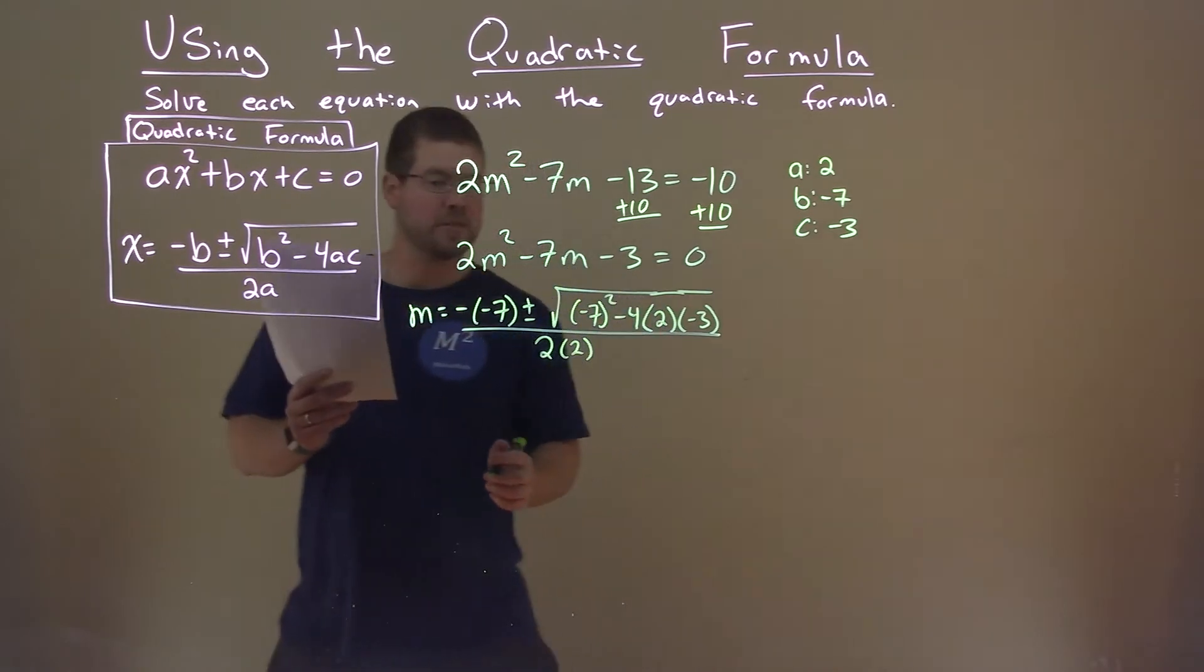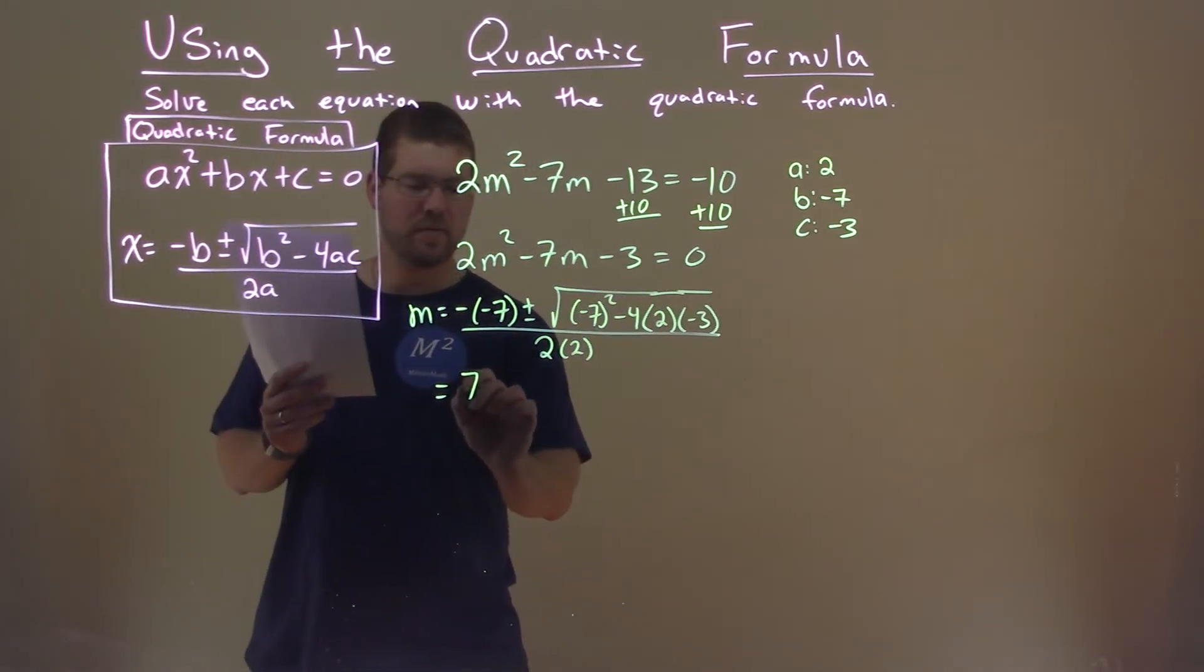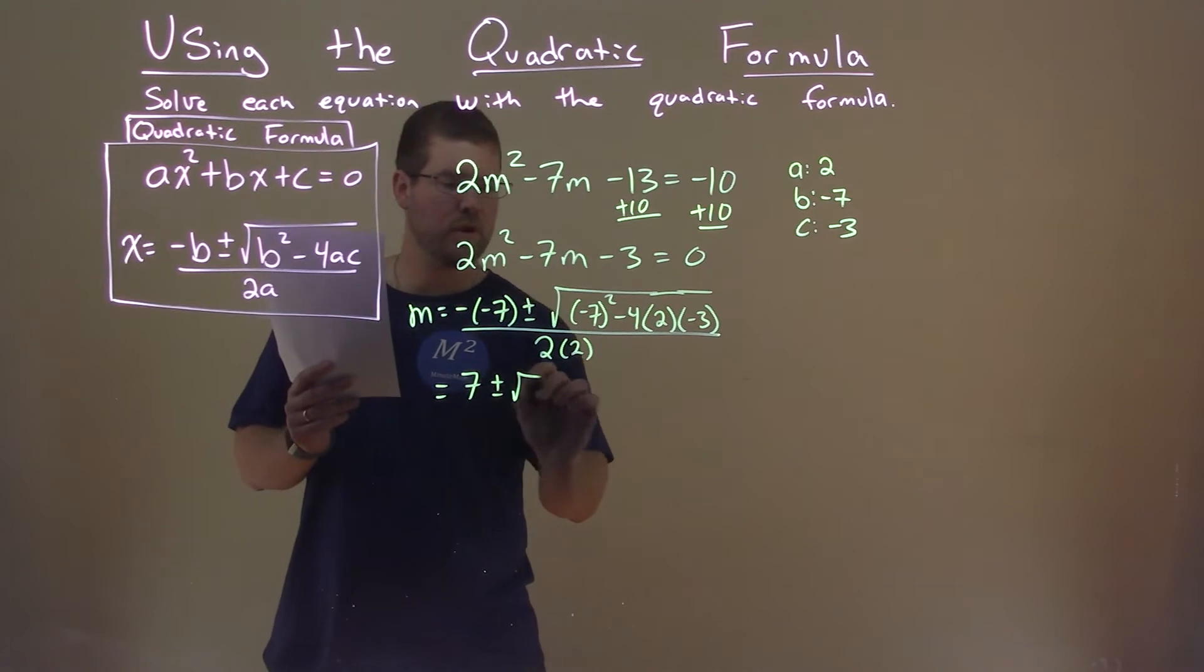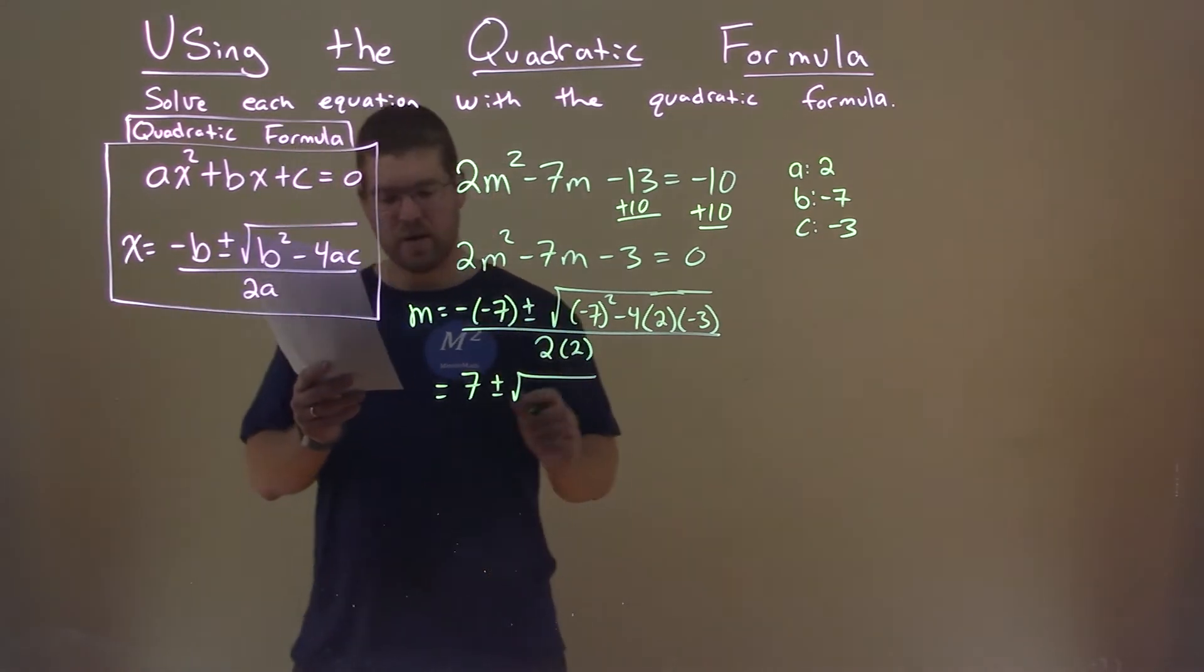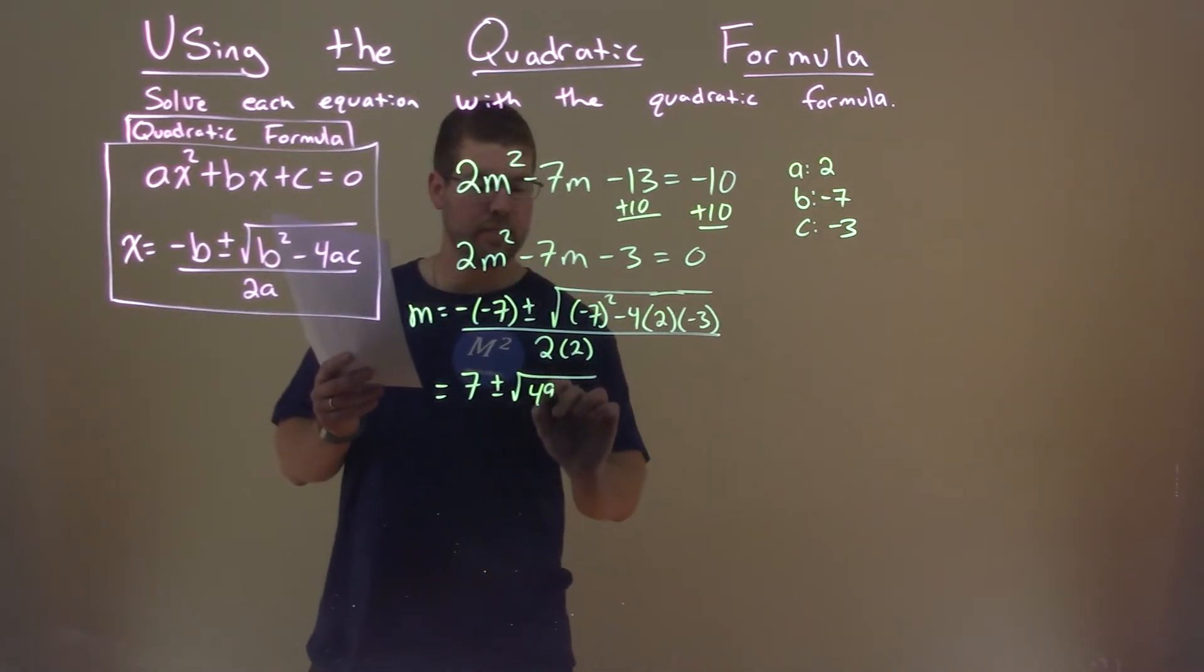All right, let's simplify this. Negative negative 7 is positive 7, plus or minus the square root of... negative 7 squared is 49, positive 49.